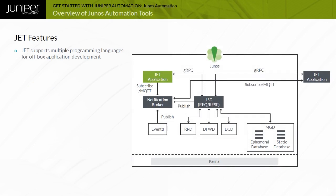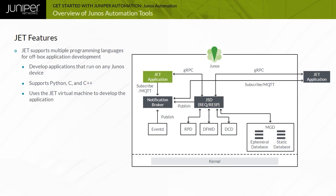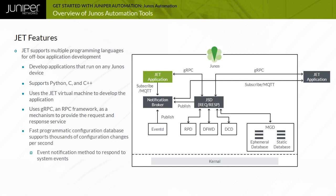JET supports multiple programming languages for off-box application development. On-box JET applications can be developed in Python, C, or C++. If an application has a dependency on C or C++ modules, or the application needs to be signed, you can use the JET virtual machine provided by Juniper to develop it. JET uses GRPC, an RPC framework, as a mechanism to provide the request and response service. The GRPC server is part of the JSD process. To keep up with rapid configuration changes that automation systems can generate, JET includes the fast programmatic configuration feature, often referred to as the ephemeral database.